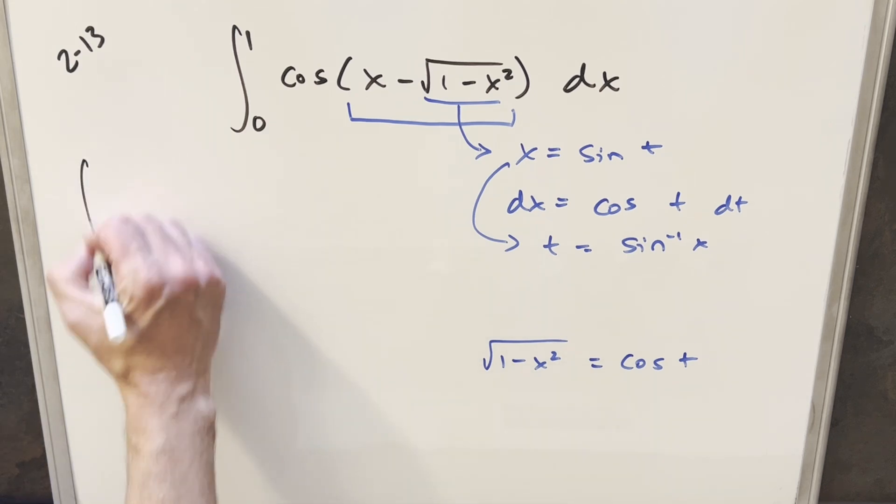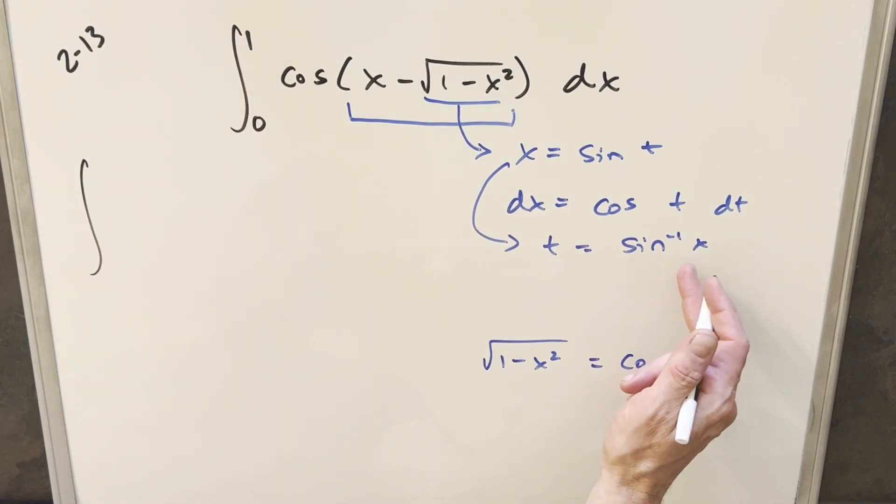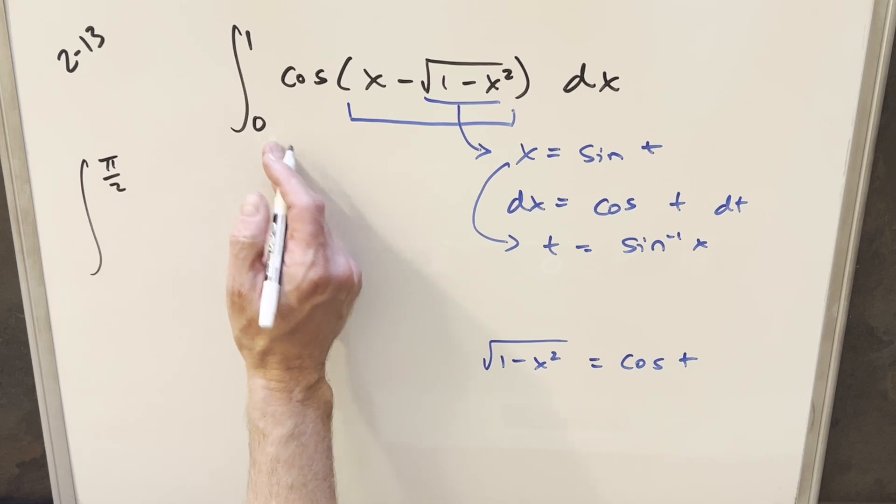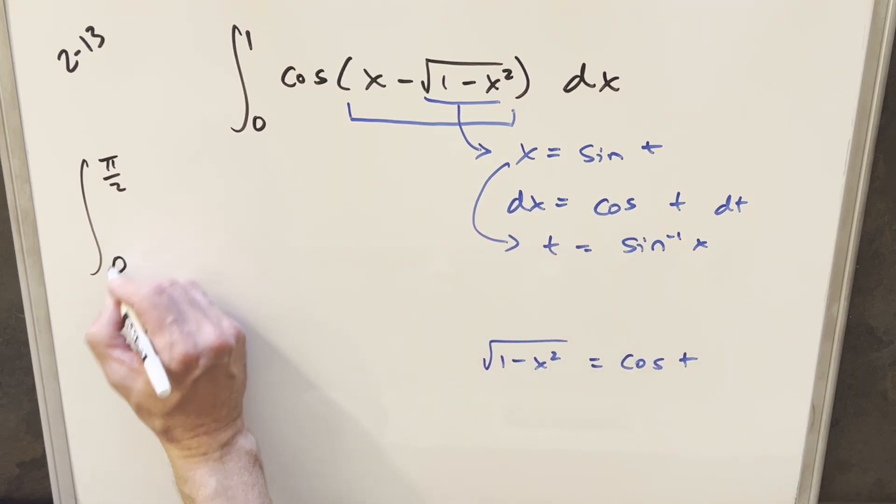So now we'll just go ahead with this substitution. So first taking our value for 1, arc sine of 1, that's going to happen at pi over 2, and then for 0 arc sine of 0, that's just 0.